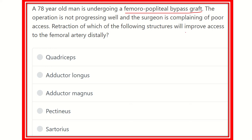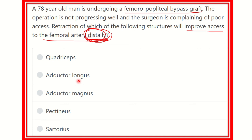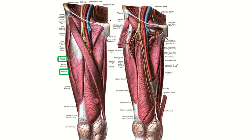We know the femoral artery is more accessible in the femoral triangle, but we need to identify which structure covers the femoral artery distally. The options are: adductor longus muscle, adductor magnus muscle, pectineus, and sartorius.